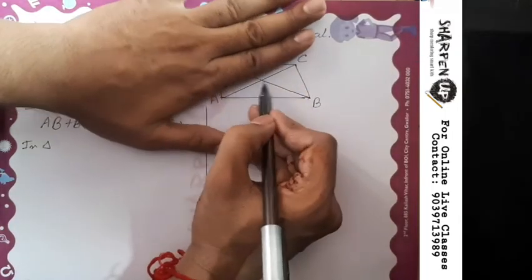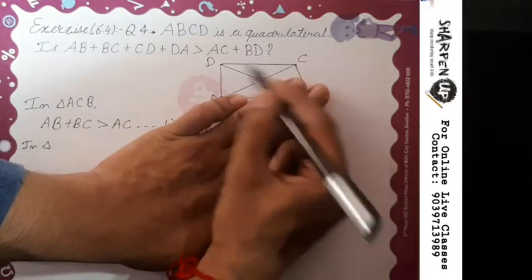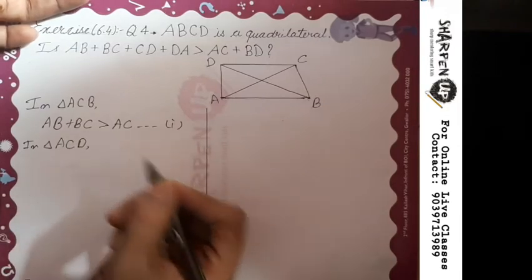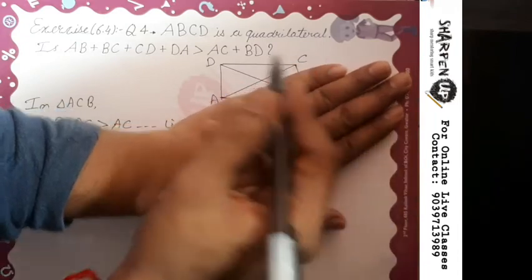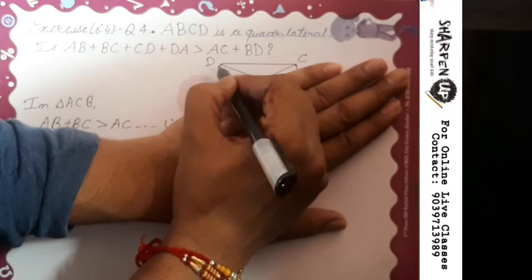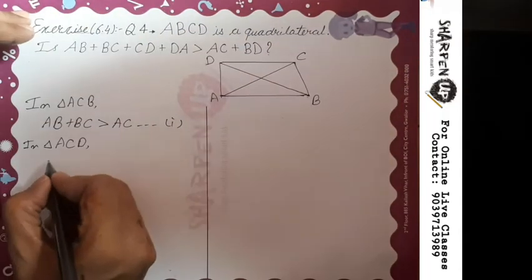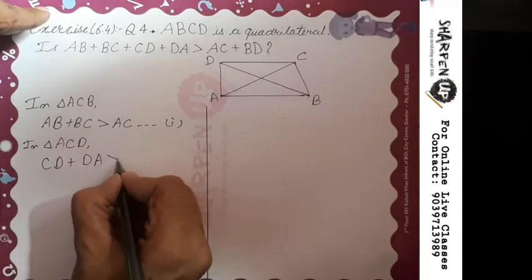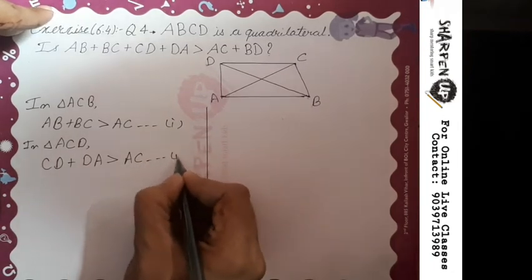Now take our second triangle: hiding the lower part of the quadrilateral gives triangle ACD. Applying triangle inequality, I add sides CD and DA, which gives CD plus DA is greater than third side AC. Let's name this expression two.